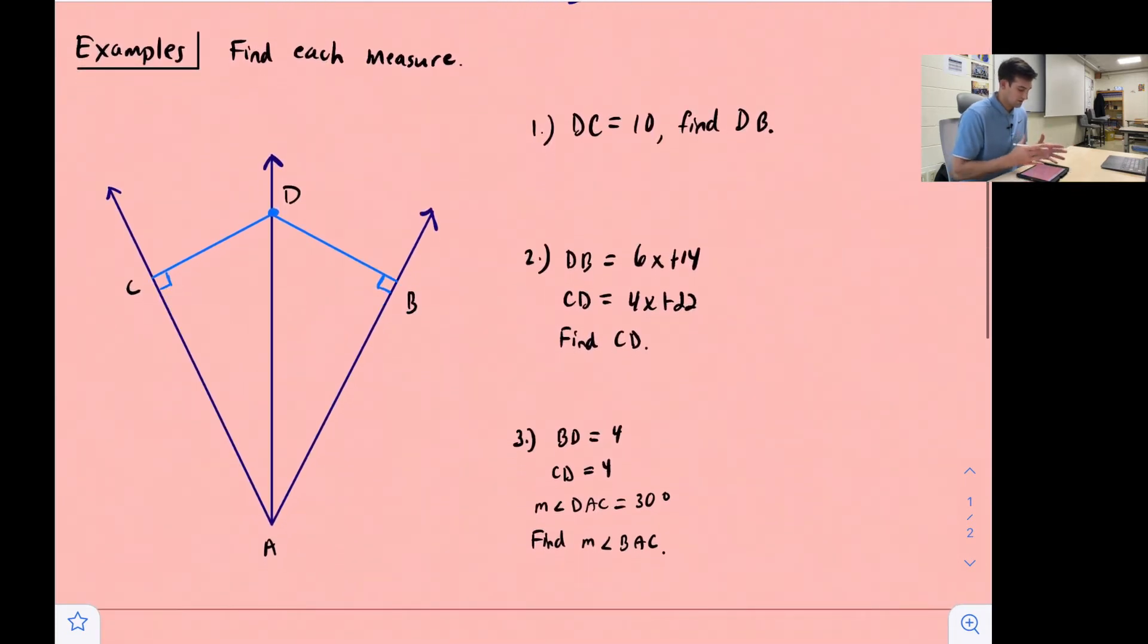We're going to find each measure. So we have this diagram here, it's just been rotated, but it tells us that DC is equal to 10, so we can add that in right there. And we notice that we have the right angle boxes here, we have the angle bisector, so we know we can apply our angle bisector theorem. So now we want to find DB, well that's just also going to be 10.